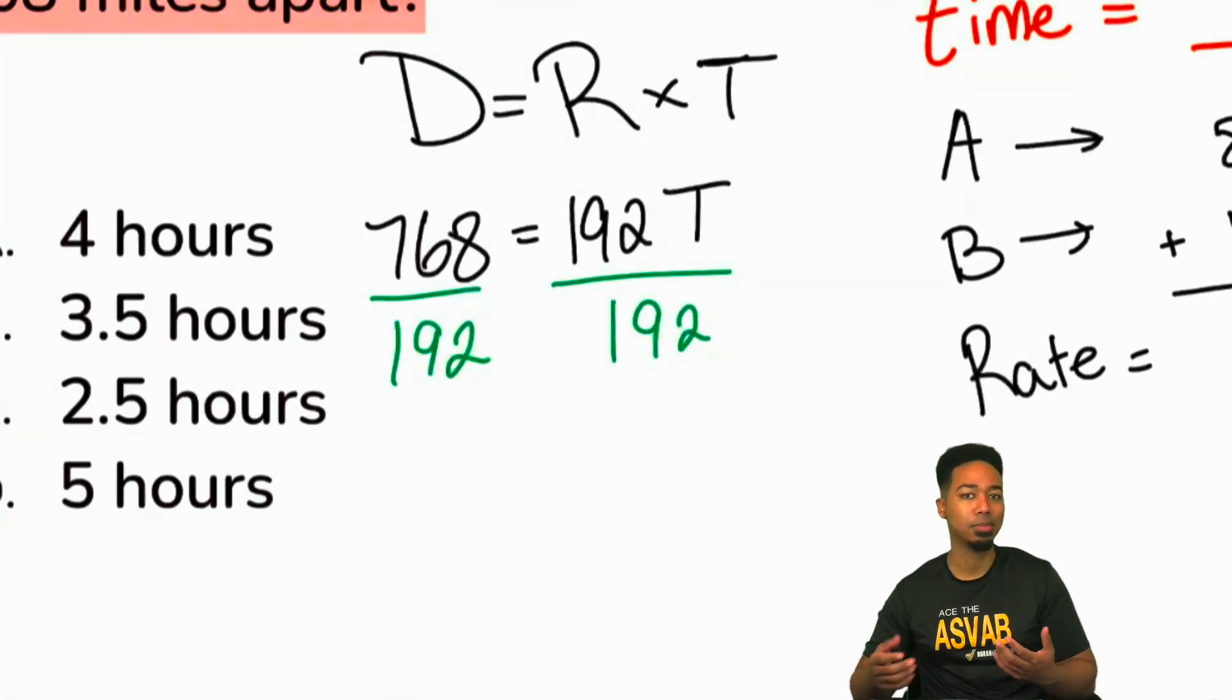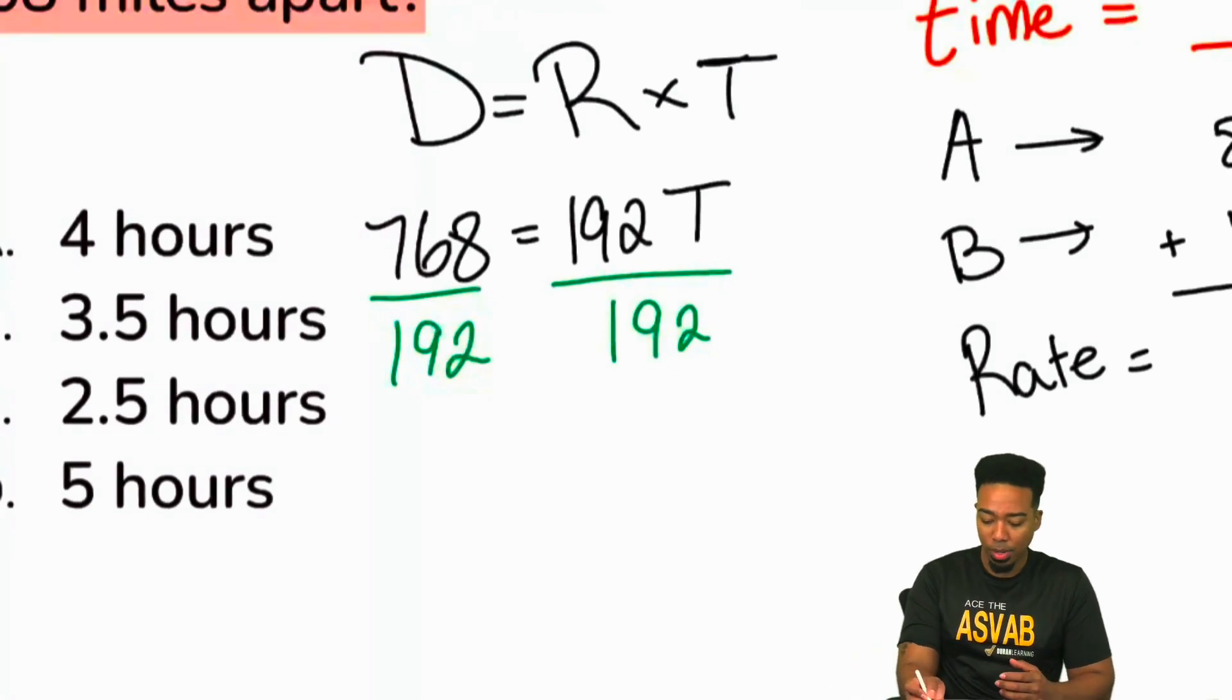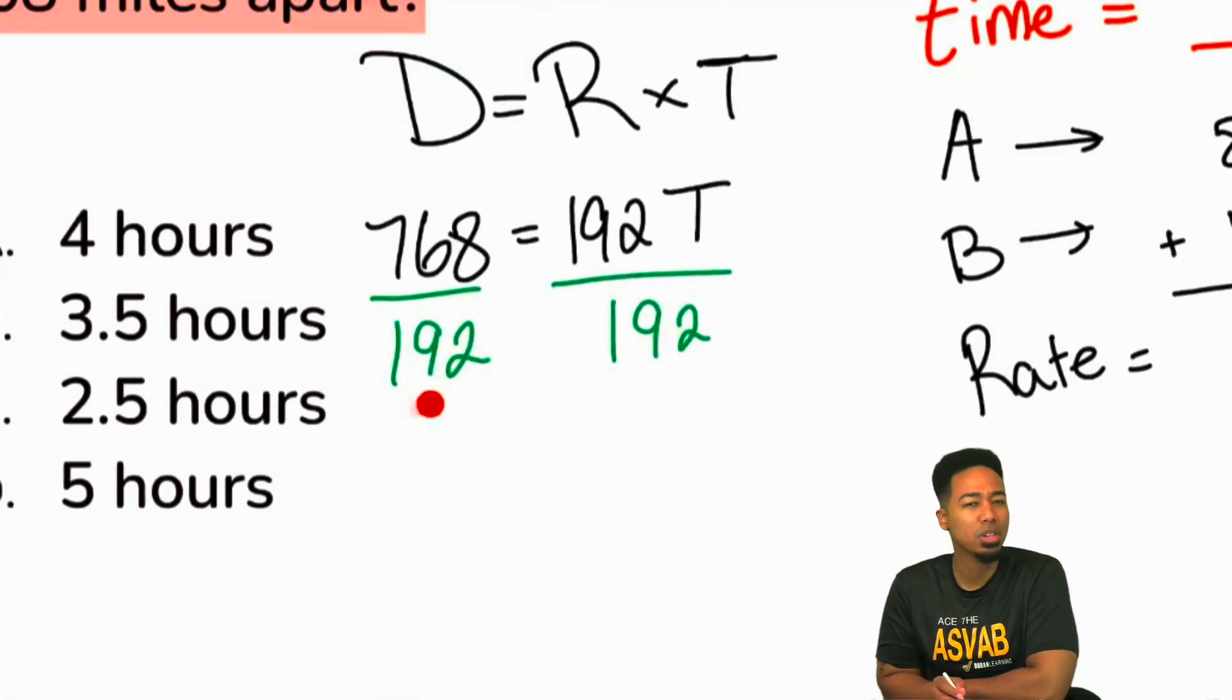So here, for those of us with not much mental math experience, here's a nice little thing. When you're dealing with larger numbers, estimation can be your friend, but you have to know how to estimate. So here, what I'm looking at is a value that's pretty close to 200. 768, since I'm rounding to the nearest hundred, I'll round that to the nearest hundred, 800. So it looks like we have about 800 divided by about 200.